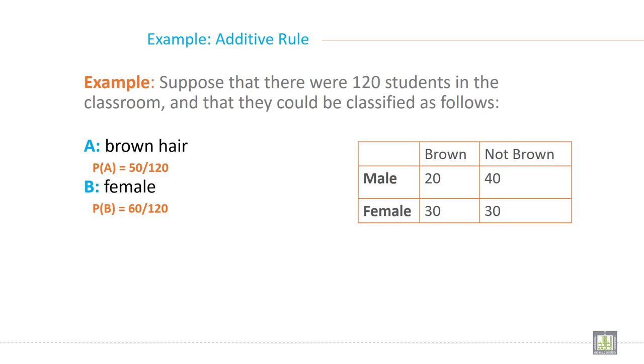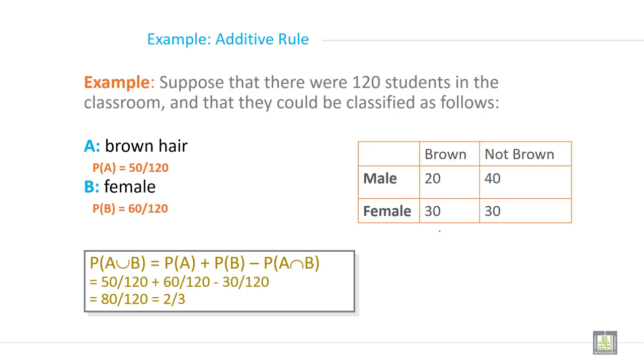So for brown hair, probability of A equals 50 divided by 120. The total brown is 50, not brown is 70, and the total is 120. So probability of A is 50 divided by 120.